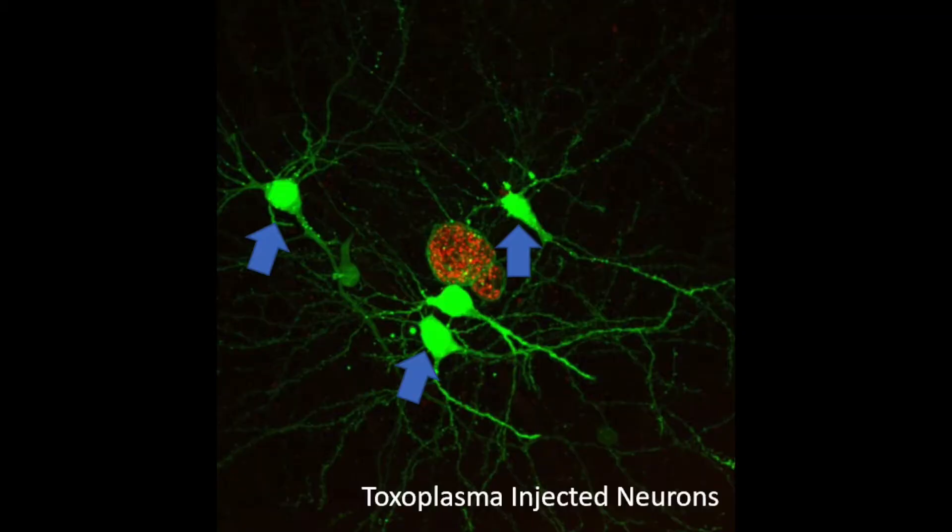By the end of the summer, we expect to have quantified all of these and see if they co-localize with GFP positive neurons. These are Toxoplasma-injected neurons, and these cells, when in contact with Toxoplasma, will express GFP.